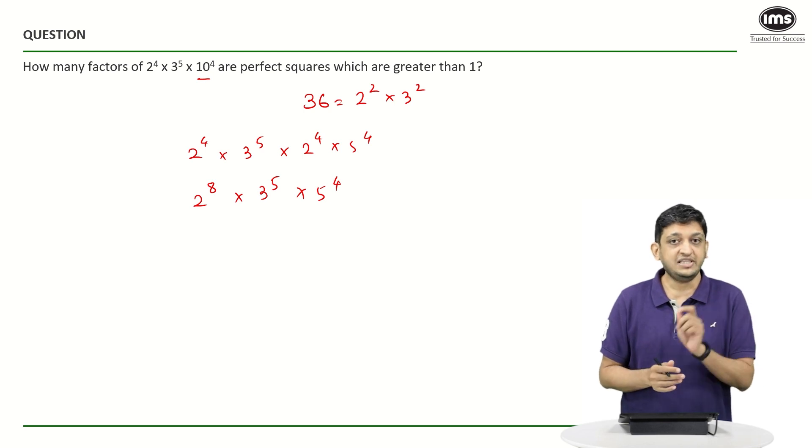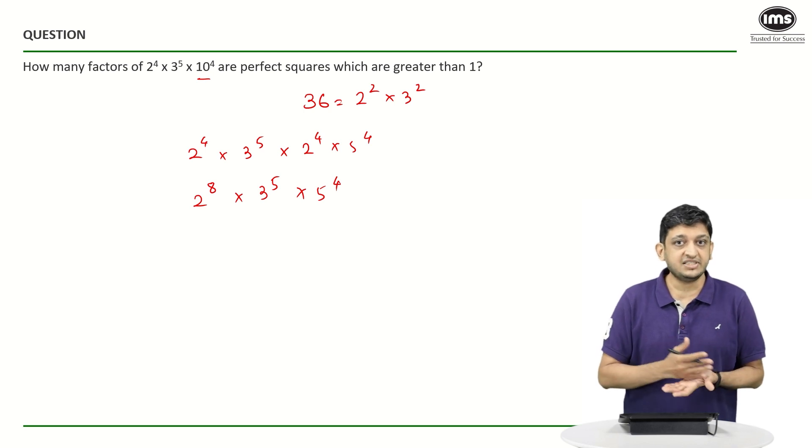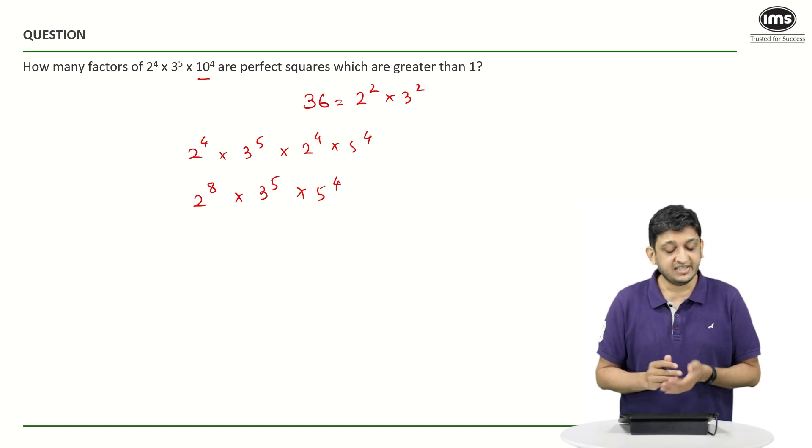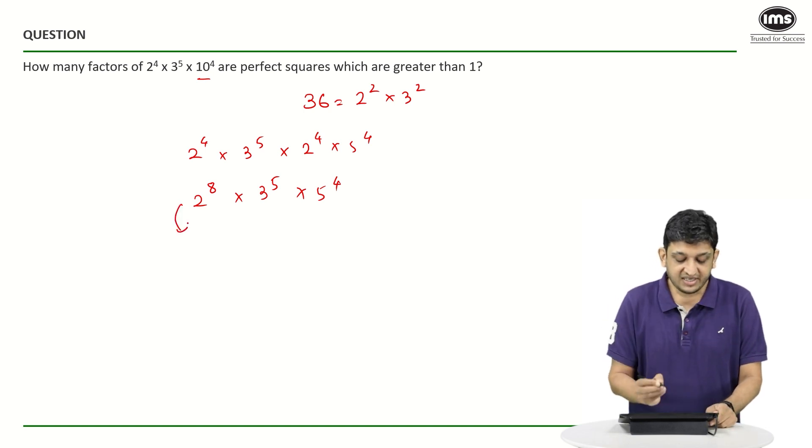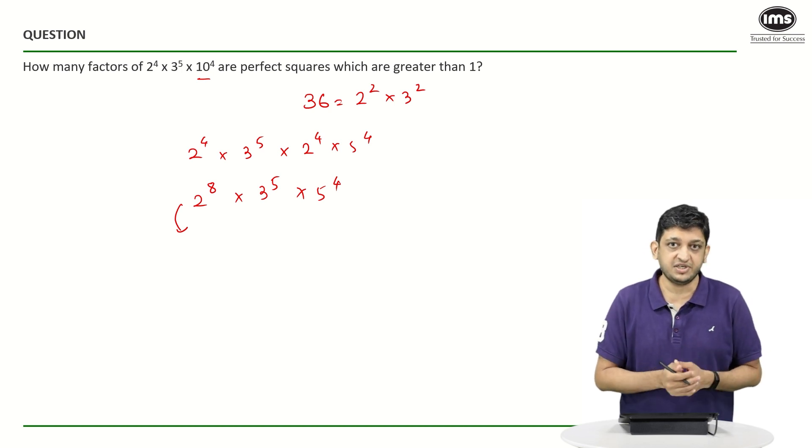Now how to find out whether a number is a perfect square or not, we have already seen it - the power should be even in nature. Now what all powers can 2 take in this particular expression, or what all even powers can 2 take in this particular expression?